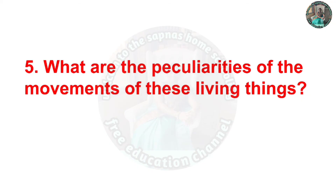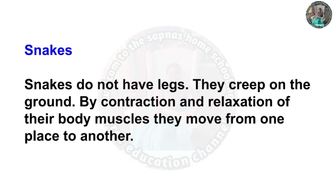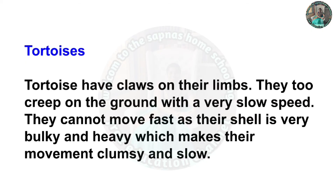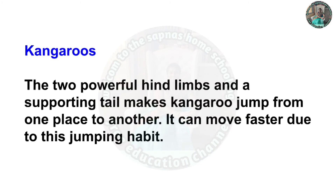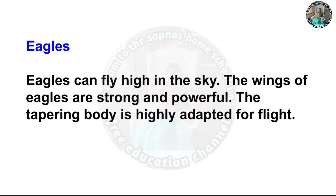Question 5. What are the peculiarities of the movements of living things? Snakes: Snakes do not have legs; they creep on the ground by contraction and relaxation of their body muscles to move from one place to another. Tortoise: Tortoises have claws on their limbs and creep on the ground at a very slow speed. Their shell is very bulky and heavy, making their movement clumsy and slow. Kangaroos: The two powerful hind limbs and a supporting tail make the kangaroo jump from one place to another; it can move faster due to this jumping habit. Eagles: Eagles can fly high in the sky. Their wings are strong and powerful, and the tapering body is highly adapted for flight.